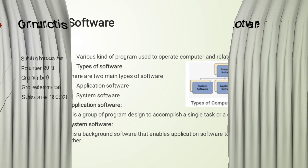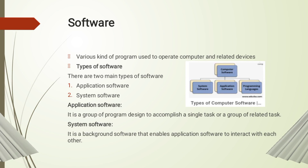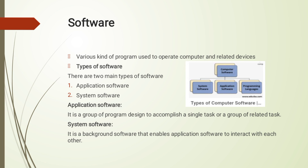First of all, we'll discuss about software. What is software? In order to operate and relate computer devices, we use various types of programs, which are called software. Computer software consists of three main types: system software, application software, and programming languages.